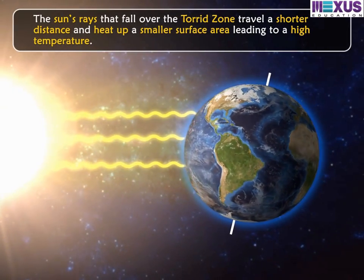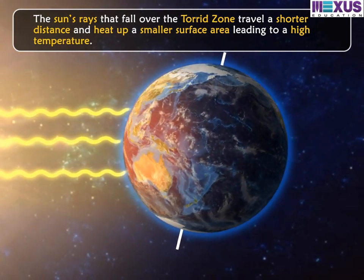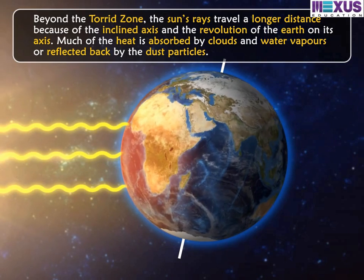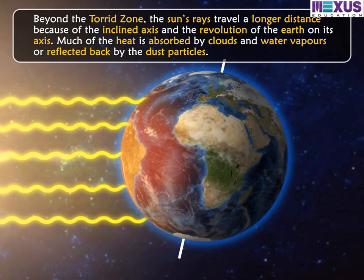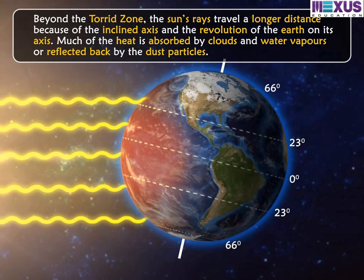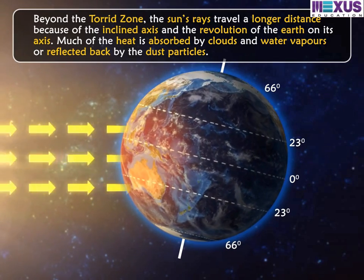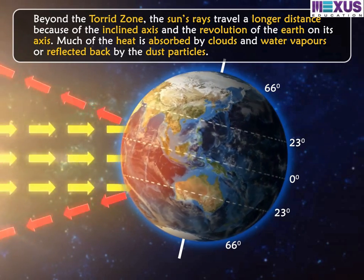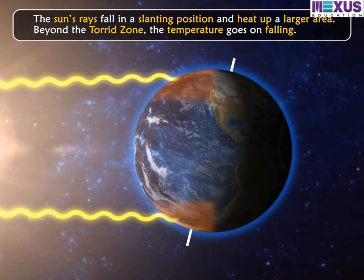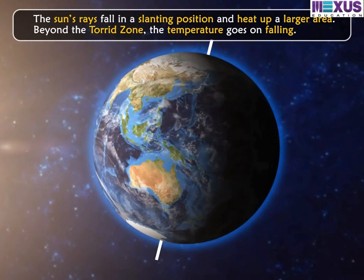The sun's rays that fall over the torrid zone travel a shorter distance and heat up a smaller surface area, leading to a high temperature. Beyond the torrid zone, the sun's rays travel a longer distance because of the inclined axis and the revolution of the Earth. Much of the heat is absorbed by clouds and water vapours, or reflected back by dust particles. The sun's rays fall in a slanting position and heat up a larger area, so beyond the torrid zone, the temperature goes on falling.